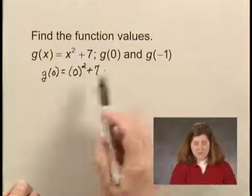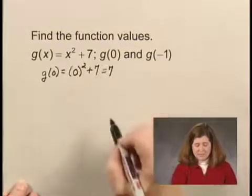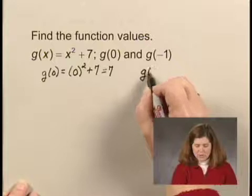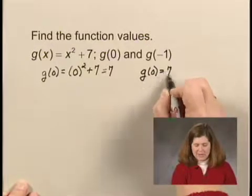0 squared, which is 0 plus 7, is 7. So I can say that g of 0 equals 7.